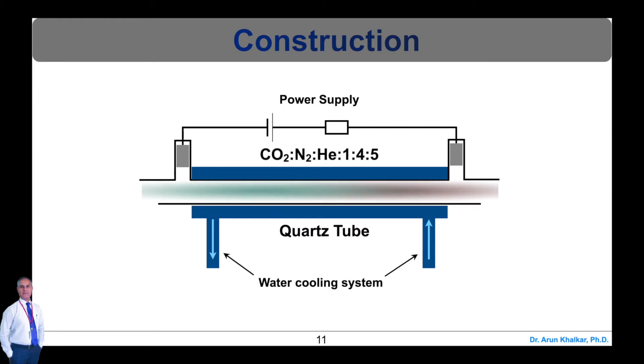Two mirrors are arranged externally—one is fully reflective and the other is partially transmissive. This forms the optical resonator.